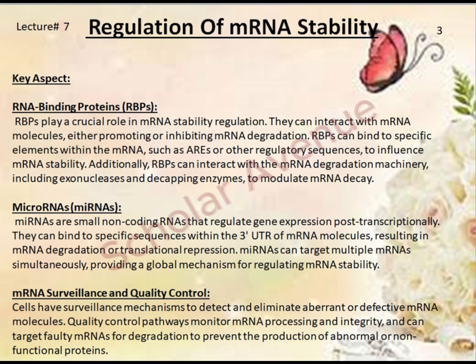Fifth are RNA binding proteins (RBPs). RBPs play a crucial role in mRNA stability regulation. They can interact with mRNA molecules, either promoting or inhibiting mRNA degradation. RBPs can bind to specific elements within the mRNA, such as AREs or other regulatory sequences, to influence mRNA stability. Additionally, RBPs can interact with the mRNA degradation machinery, including exonucleases and decapping enzymes, to modulate mRNA decay.